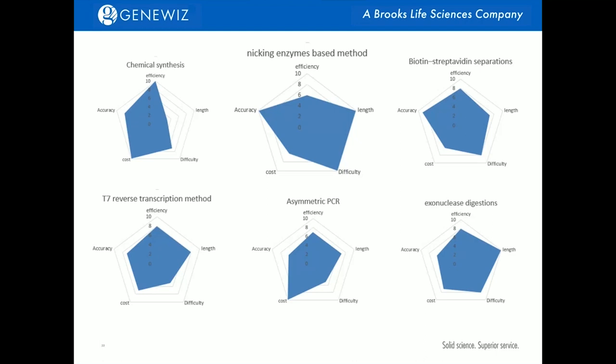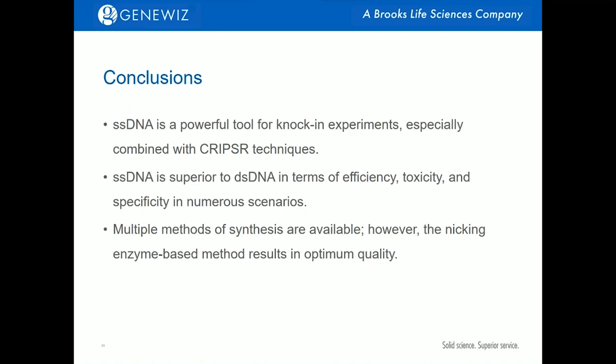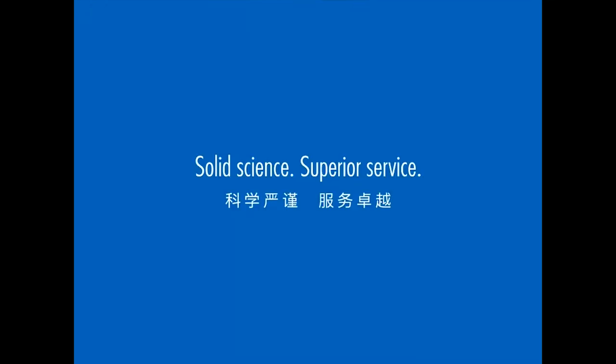Here is a summary slide comparing the key performance of all six methods when planning to generate single-strand DNA. We believe that in terms of quality, the nickase enzyme-based method is the best choice. But if you have other concerns — for example, if you care more about cost or timing — you may choose other methods accordingly. In conclusion, we hope during this talk you have become more familiar with ssDNA's great potential in assisting your knock-in experiment. Whenever you design an experiment with double-strand DNA, think about using single-strand DNA as an alternative. We have carefully compared the methods for producing ssDNA, and GeneWiz chooses the nickase method, as we value product quality the most.